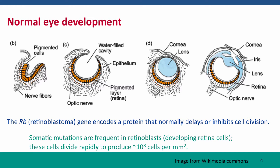In normal eye development, the eye starts just as a depression in a layer of cells on the surface of the embryonic head, and that depression forms a cup, and the cells inside the cup divide and differentiate to form the retina, the light-sensitive tissue of the eye. Retinoblastoma occurs when there's a mutation in the gene named RB for retinoblastoma. This gene encodes a protein whose normal job is to delay or inhibit cell division as the retina matures, and it's time for the retinoblasts, the retinal precursor cells, to stop dividing.